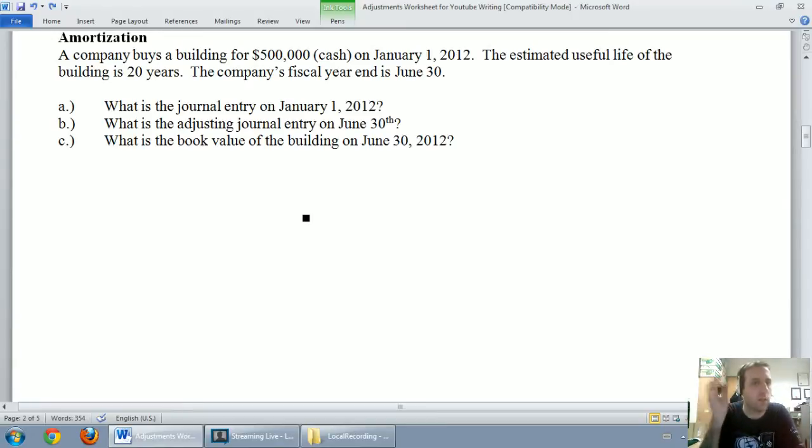So here's the example question. A company buys a building for $500,000 cash on January 1st, 2012. The estimated useful life of the building is 20 years. The company's fiscal year end is June 30th. This was unusual to me when I was an accounting student - when a company buys something, the day they buy it, the accountant actually has to estimate how many years they think it's going to be useful for. They have to estimate its useful life.